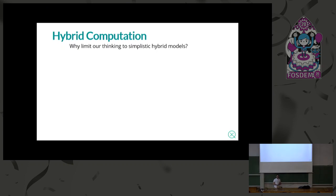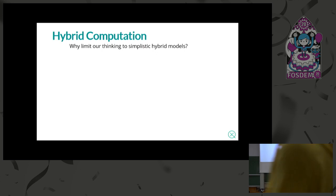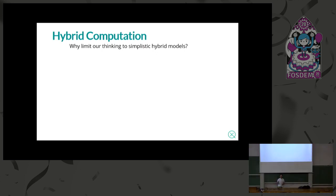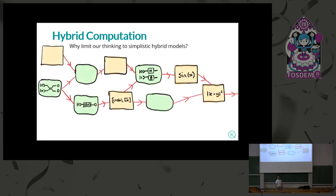Variational quantum algorithms so far have been quite simple in scope — mostly one or a couple of quantum devices with a classical optimization loop directly training the circuit. Back in July 2018 we were thinking: what if we want to do more than that? What if we have an arbitrary computational graph, where green nodes are quantum circuits and yellow nodes are arbitrary classical processing, and we want it to be as arbitrary as we want? Why can't we replace some layers in a machine learning model with quantum layers?